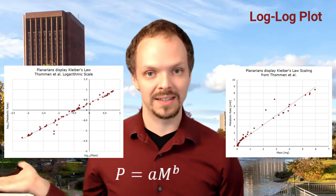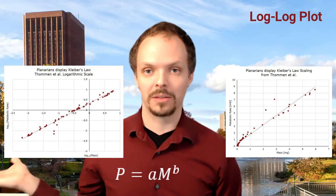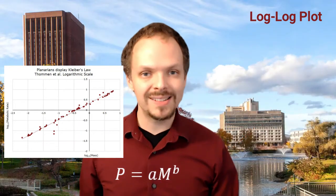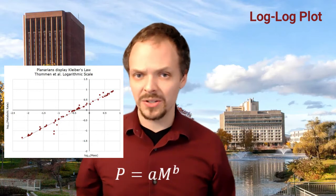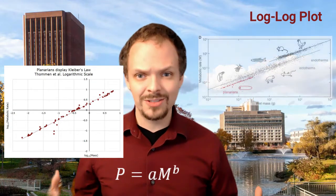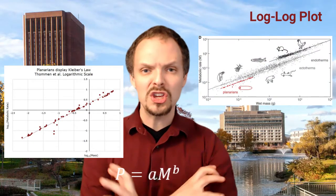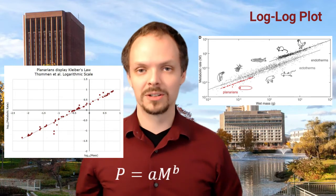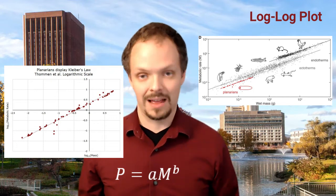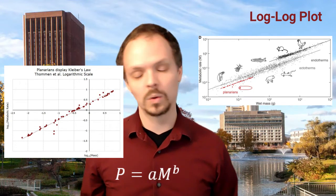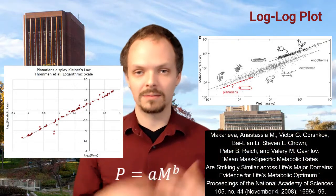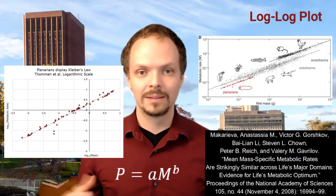The intercept of this line is b times the logarithm of a, and so from this we can actually figure out both b and a. It turns out that, for reasons we don't fully understand, b is basically 0.75 over a huge range of species — from basically bacteria to humans, the power b in Kleibler's law is 0.75. I personally think that this is really interesting and kind of cool. There are a lot of different explanations for it, one of which is in a reference at the bottom of the screen. But it's just a cool example of how you can use a log-log plot to learn something.